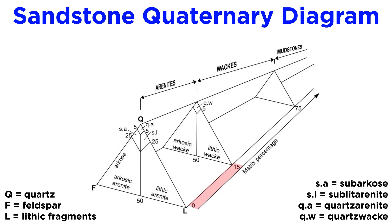Let's start by assuming the amount of matrix is zero. These are known as arenites. Sandstones that are very rich in quartz are called quartz arenites. If the framework is composed mainly of quartz and lithic fragments, it is called a lithic arenite. If it is instead quartz and feldspar, it would be an arcosic or feldspathic arenite. Sandstones with more than 15% matrix are called wackes, so if the framework was dominated by quartz and lithic fragments, it would be classified as a lithic wacke, and so forth. Sedimentary rocks with more than 50% matrix are considered mudstones.